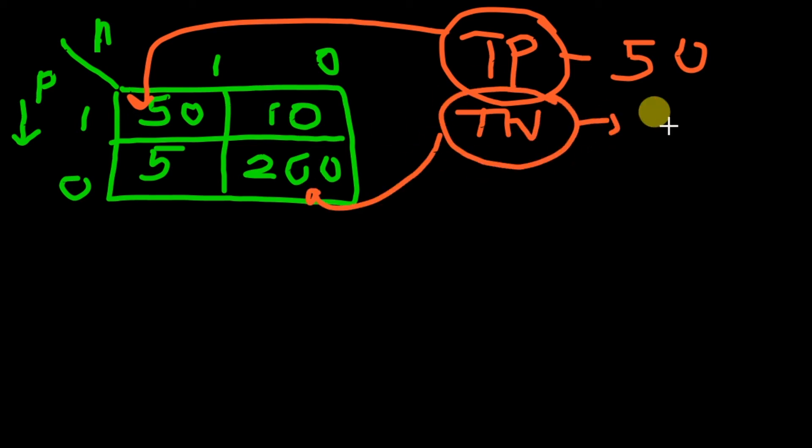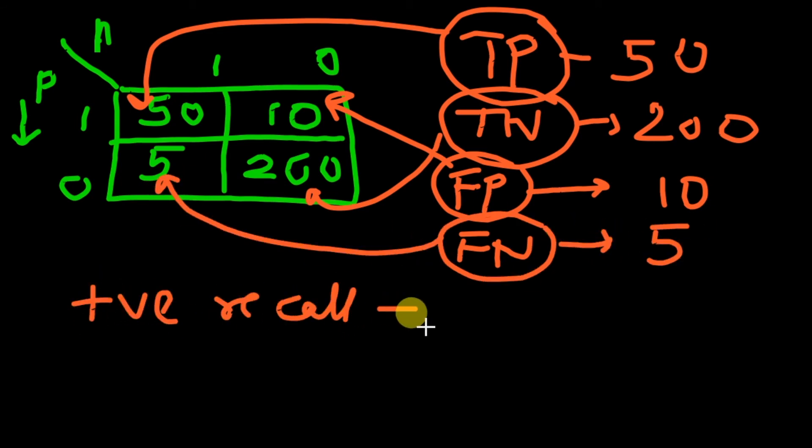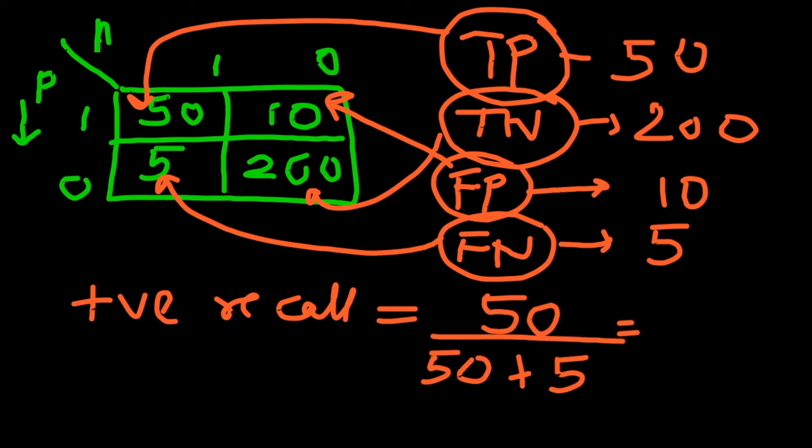So in our case, the true positive is 50, true negative is 200, false positive is 10 and false negative is 5. Going by the formula of positive recall, which is true positive by true positive plus false negative, we have sensitivity equal to 0.90.